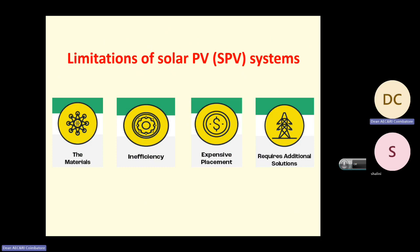Regarding limitations of PV cells, the efficiency of PV cells is hardly eight to ten percent. Whatever energy falls on the PV cell, only eight to ten percent is converted into electrical energy. There is a lot of scope in increasing this efficiency — for example, by changing the material of the cell itself.